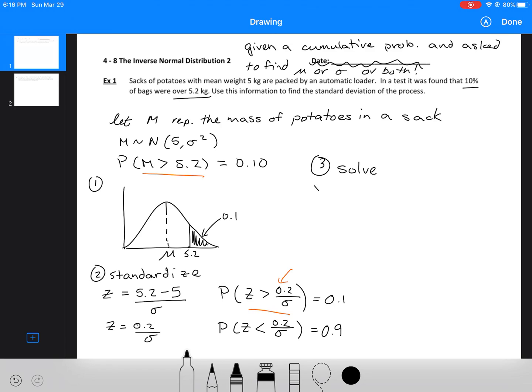Once I've set that up, now I can solve. I'm going to use my graphing calculator. I'm going to use the inverse normal function. I'm going to enter my answer and then my parameters for the standard normal distribution. So this is kind of like an aside, you don't actually have to write it down. When I use that graphing calculator function, that tells me that 0.2 over sigma is equal to 1.28155.